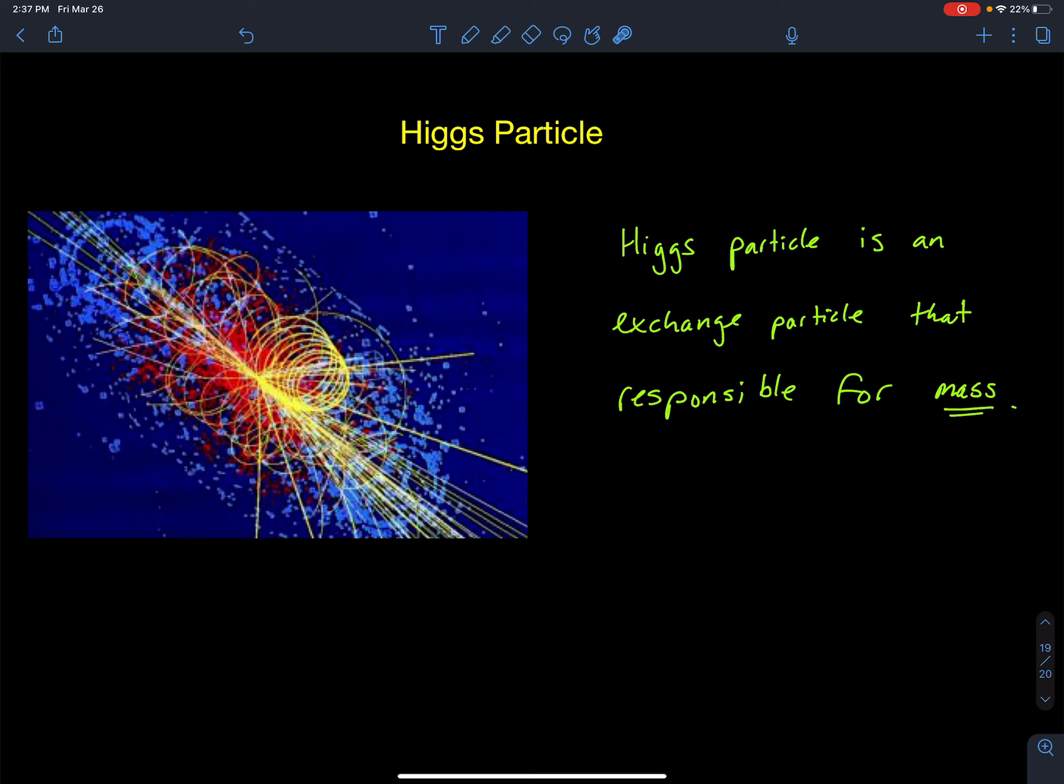As I fall through water, I will experience resistance. Well, that could be because my body is spitting out Higgs particles and interacting with other matter of mass, causing interactions that slow me down. So the Higgs particle is an exchange particle that is responsible for mass, and it is massive. That might appear on a multiple choice question.